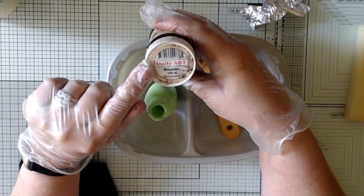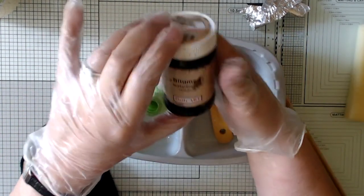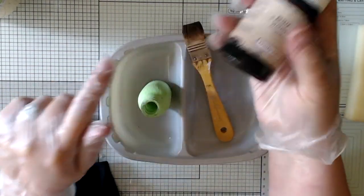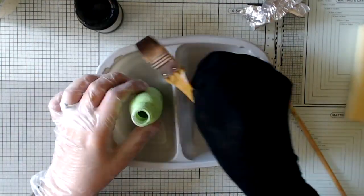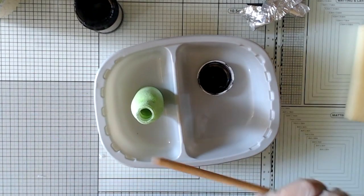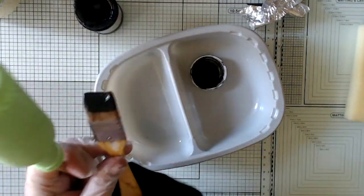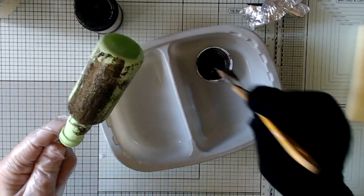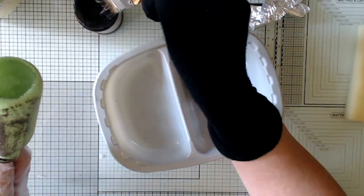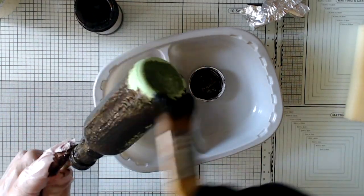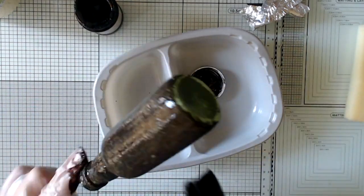When the paint is dry, I'm going to antique it with a bitumen substitute paint. I am wearing gloves, and I've got an old sock on one hand, and you'll see why I'm doing that in a minute. First, I gave the bottle a generous coat of paint, and then immediately I'm wiping it off with the sock. This particular paint is water-based.